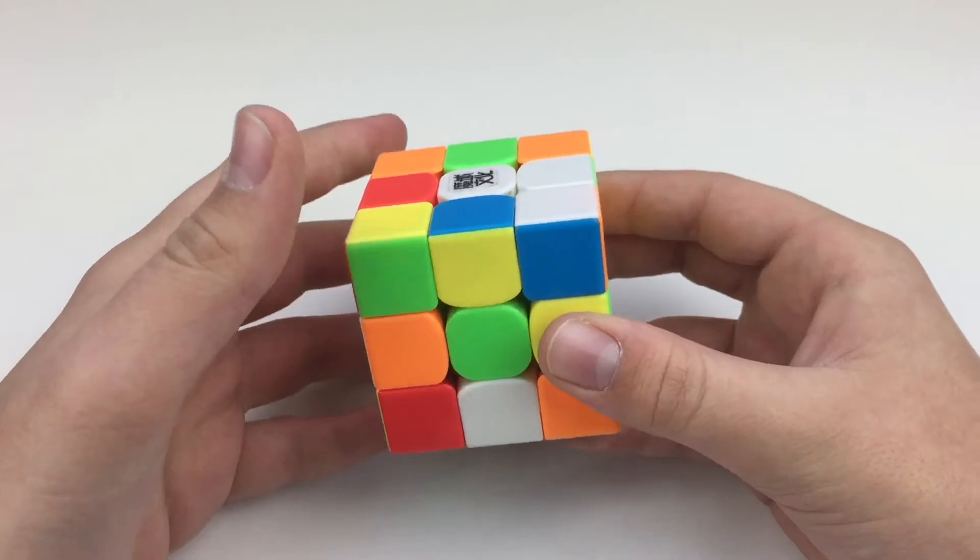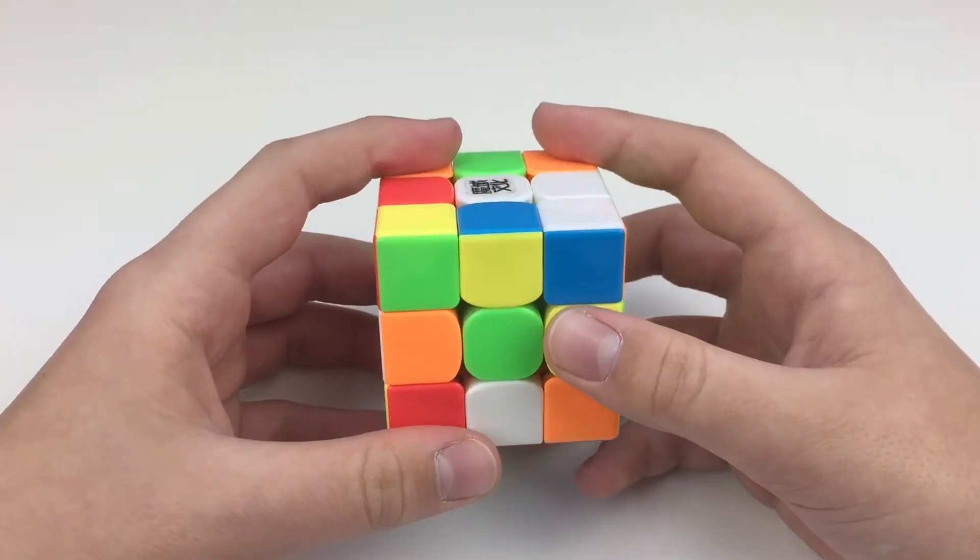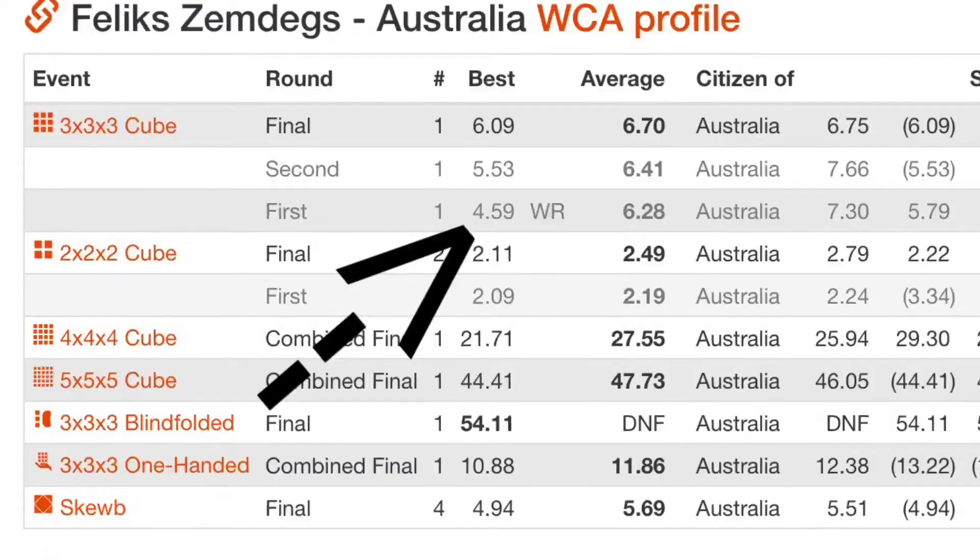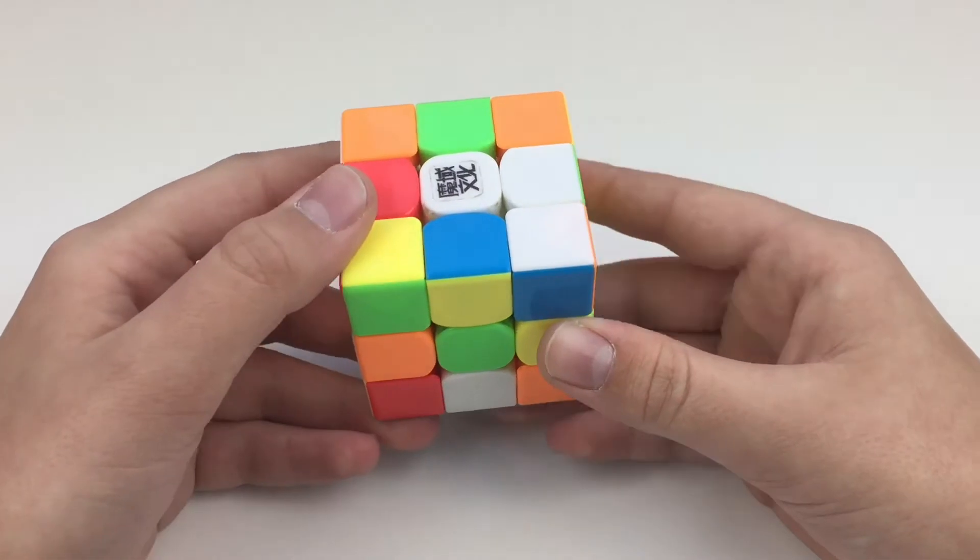Felix Zemdeg's tied Siongbyum Cho's world record. Siongbyum Cho actually had a 4.591 and Felix Zemdeg's got a 4.594, but they are considered the same because milliseconds don't count under WCA regulations.